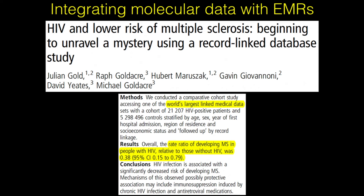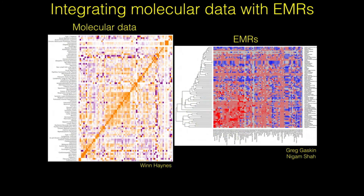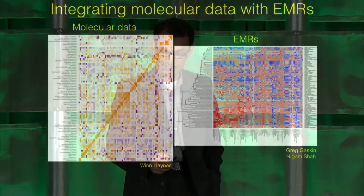So this was just one example — why not do this for all diseases we have data for and can get electronic medical records on? This is work going on with Nigam Shah at Stanford, where we are comparing all the diseases we have curated and looking at electronic medical records in Stanford Hospital to understand what similar diseases we also observe in the clinic. And this is my last slide.